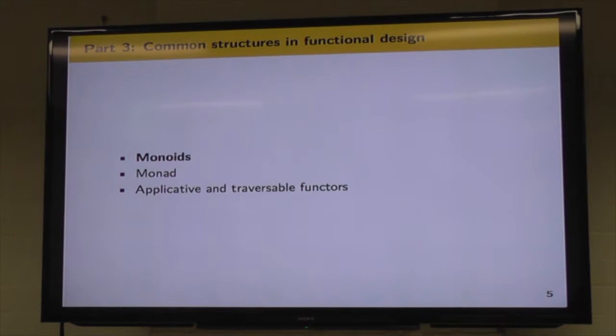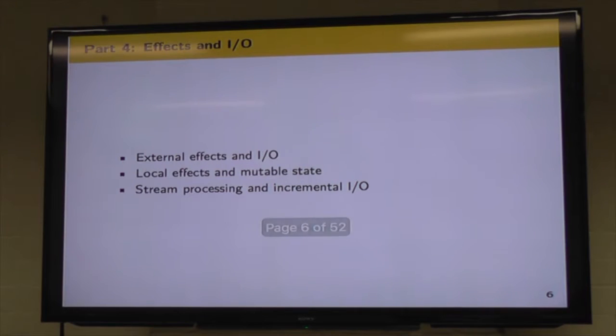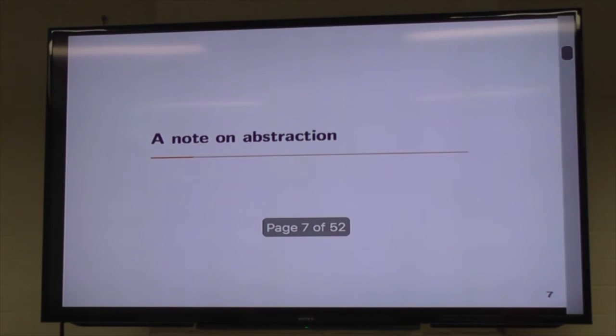The second half of my talk, I'm covering monoids, which is the first chapter in part 3, where we start to look at common structures in functional design. And then next month we get monad and applicative and traversable functors. After that we're into part 4, which we don't have to worry about tonight.